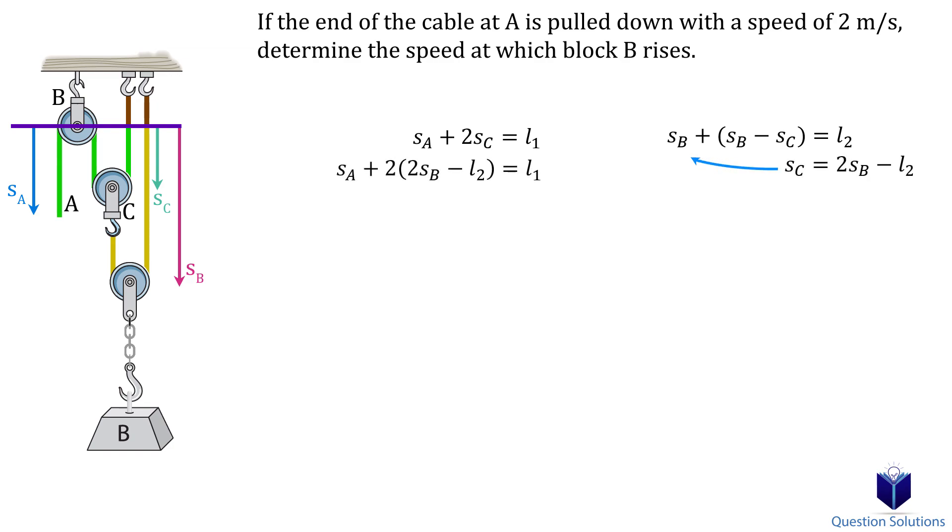Let's tidy up the equations. Now we can take the derivative giving us velocity while the constant lengths become zero. Now we can plug in the velocity at A and solve which gives us our answer. We get negative 0.5 meters per second or 0.5 meters per second upwards.